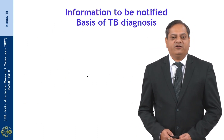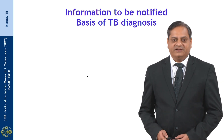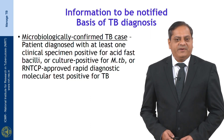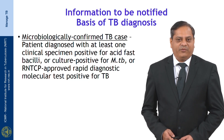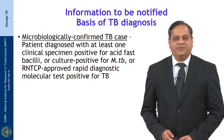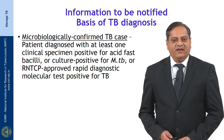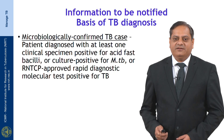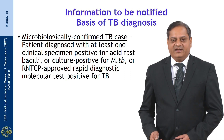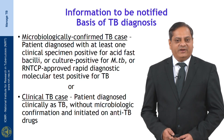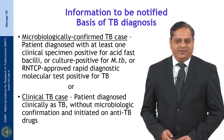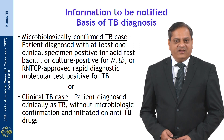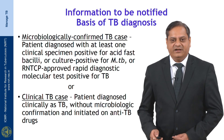What information is required to be notified? The basis of TB diagnosis has two types. First, microbiologically confirmed tuberculosis — a TB patient with at least one clinical specimen positive for acid-fast bacilli, culture positive for Mycobacterium tuberculosis, or an RNTCP-approved diagnostic molecular test positive for tuberculosis. Second, a clinical TB case — a patient diagnosed clinically as TB without microbiological confirmation and initiated on anti-TB drugs. These are the information bases of diagnosis that need to be reported.